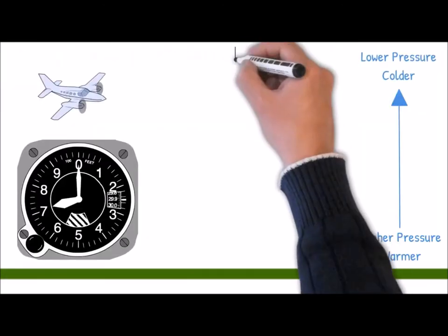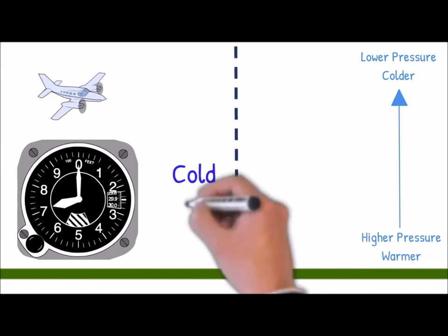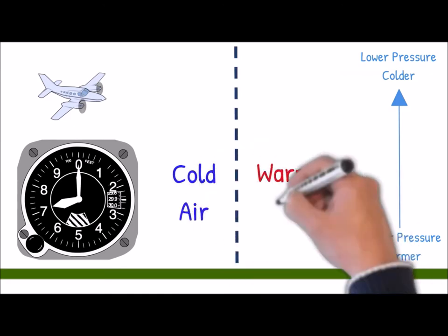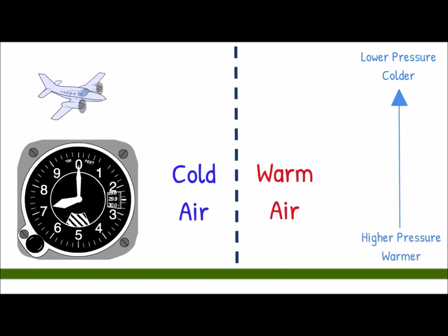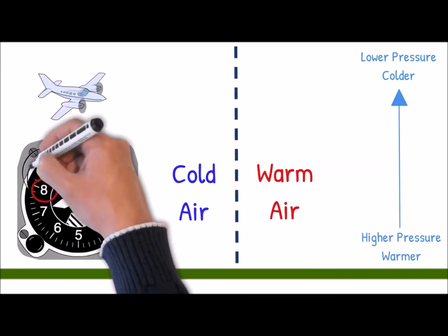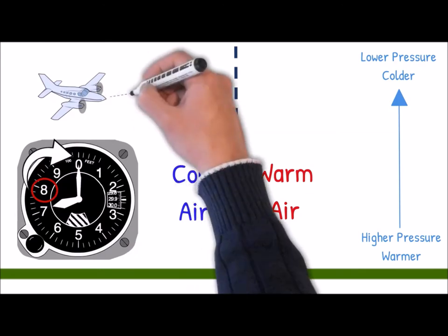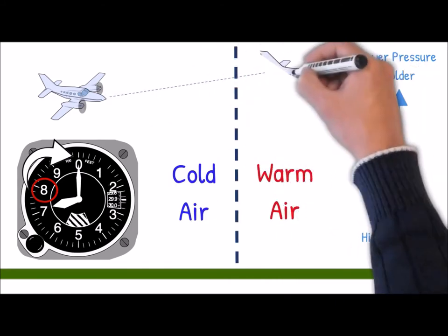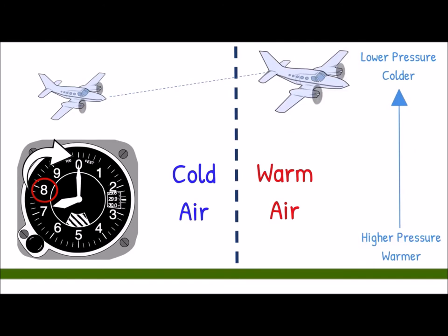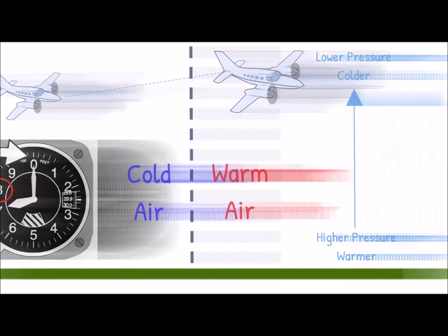When the aircraft is flying from cold air to warm air without adjusting the altimeter setting, since warmer air is less dense, the altimeter thinks it is descending. And if the pilot did nothing, the altimeter will display a lower altitude — say 6,800 feet. Slowly the pilot will climb to maintain the same indicated altitude of 7,000 feet. Without changing the altimeter setting, the pilot would gradually climb, meaning the pilot is now flying 200 feet above the intended altitude. The aircraft's true altitude will be higher than indicated.